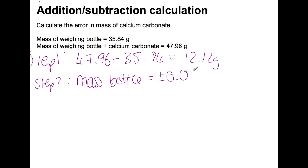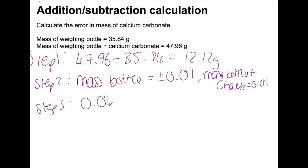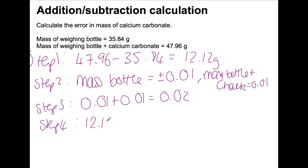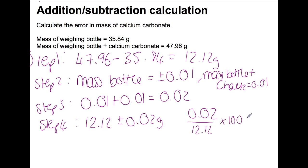Step two: we work out our absolute uncertainties because this is a subtraction calculation. We have two mass readings — the mass of the bottle has an uncertainty of 0.01, and the mass of the bottle plus chalk also has an uncertainty of 0.01 (both to two decimal places). Step three: we add these together to get a total absolute uncertainty of 0.02. We can then write: 12.12 plus or minus 0.02 grams. Converting to percentage: 0.02 divided by 12.12 times 100 gives 0.17%, so we can also write 12.12 grams plus or minus 0.17%.